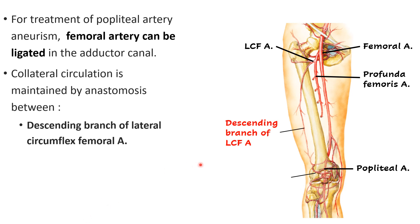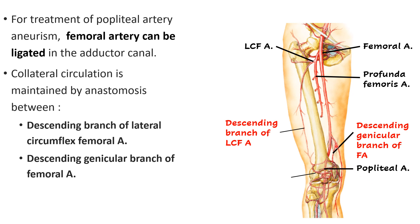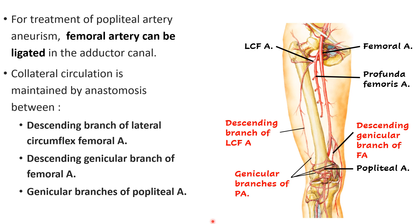The participating arteries are: first, the descending branch of the lateral circumflex femoral artery — which is a branch of profunda femoris, itself a branch of femoral artery — carrying blood from above the ligation down to the knee region. Second, the descending genicular branch of the femoral artery itself also contributes. From below, the genicular branches of the popliteal artery anastomose with these two arteries.